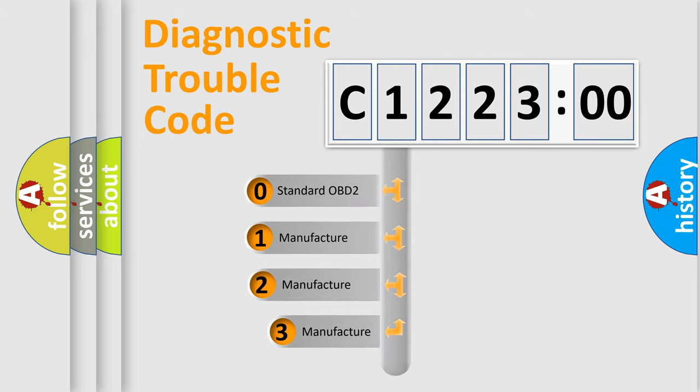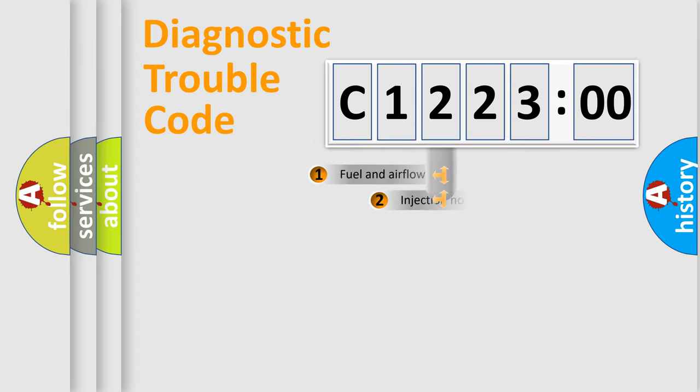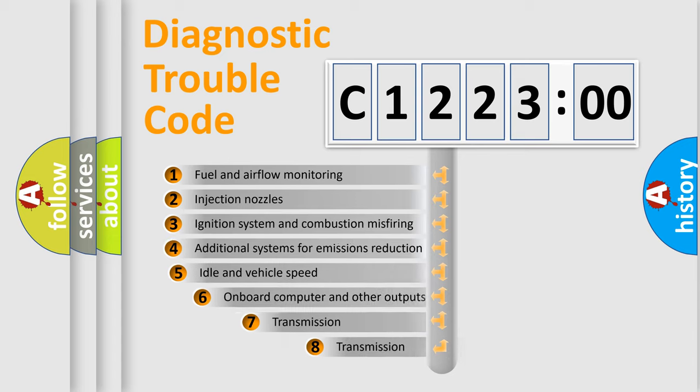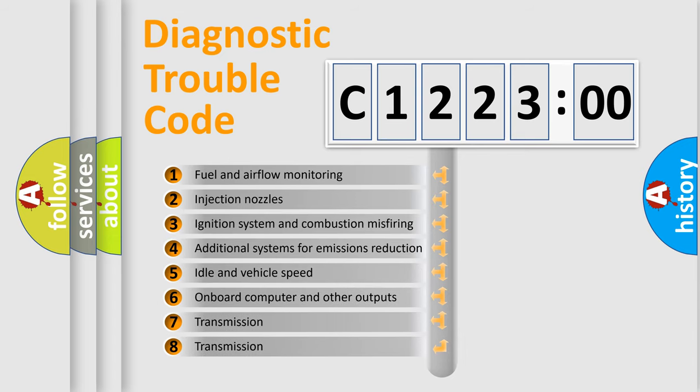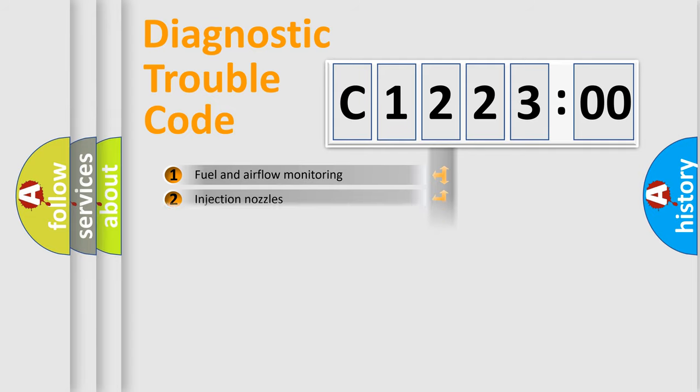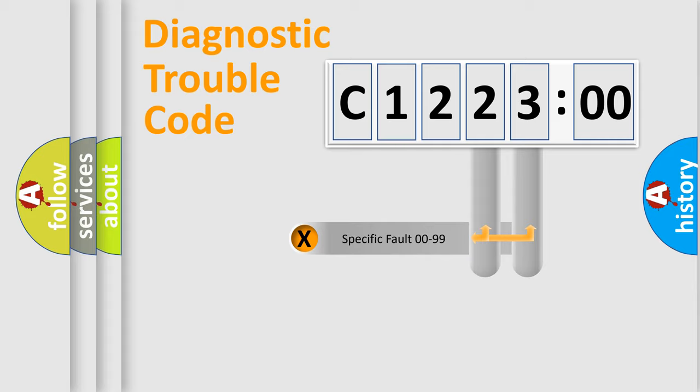This distribution is defined in the first character code. If the second character is expressed as zero, it is a standardized error. In the case of numbers 1, 2, 3, it is a manufacturer-specific expression of the car error. The third character specifies a subset of errors. The distribution shown is valid only for the standardized DTC code.